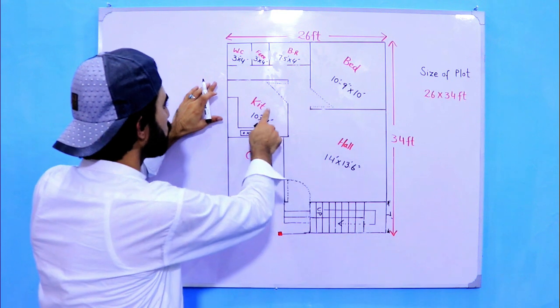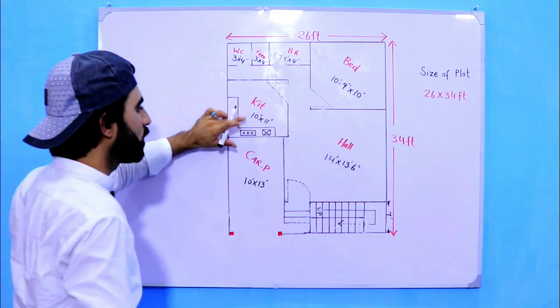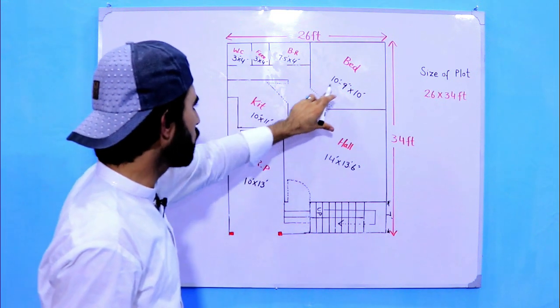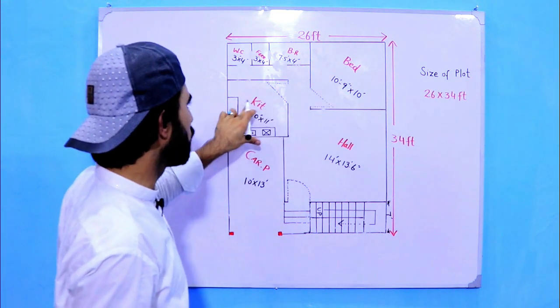In front of this bedroom you can see this is kitchen which size is 10 feet by 11 feet. This is door for this bedroom and this is the other door for this kitchen.